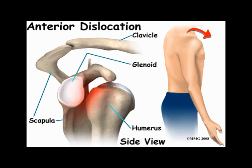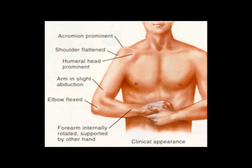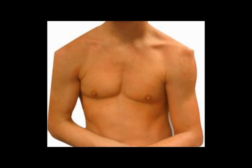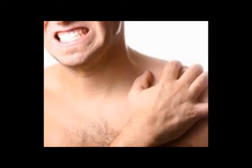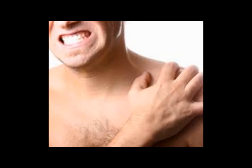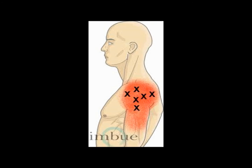The humerus is displaced anteriorly and usually comes to rest below the coracoid process. In your emergency room, a patient with a shoulder dislocation will present with severe shoulder pain and holding the dislocated arm in the unaffected arm. On examination, the shoulder appears flattened with squaring off of the shoulder contour. The humeral head may be palpable below the coracoid process, and the patient will elicit painful limitation in all ranges of shoulder movements. Always remember to check pulses and pay particular attention to the axillary nerve function by testing for sensation over the deltoid muscle.